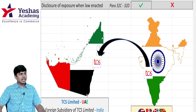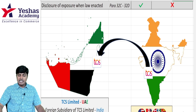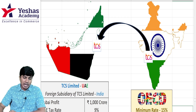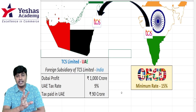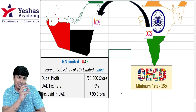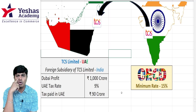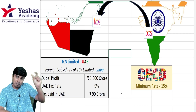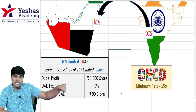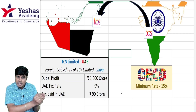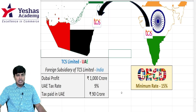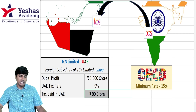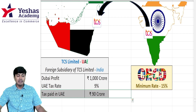Here we have a beautiful example. Tata Consultancy Services, an Indian company, has set up its subsidiary in UAE, Dubai, and they have made a profit of 1000 crores. The holding company is in India and the subsidiary company is in Dubai with 1000 crores profit. The tax rate in Dubai applicable is 9%. Applying 9% on 1000 crores gives 90 crores. So how much is the tax paid in Dubai? 90 crores.